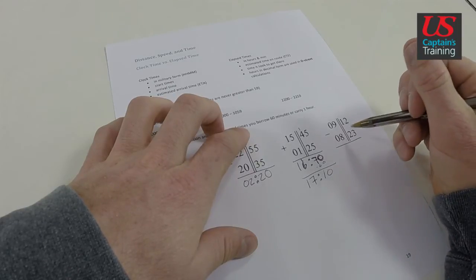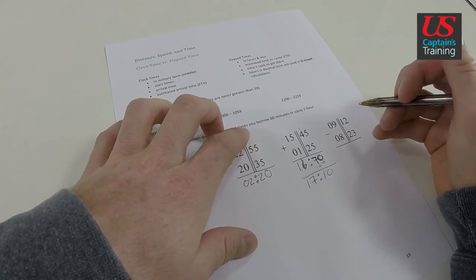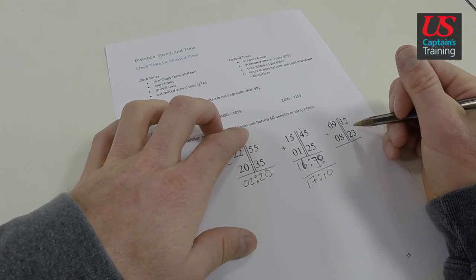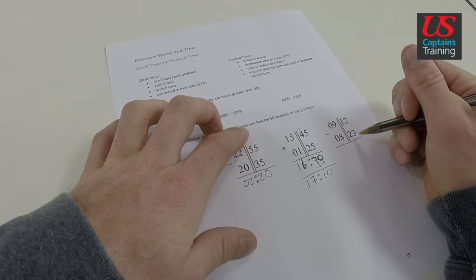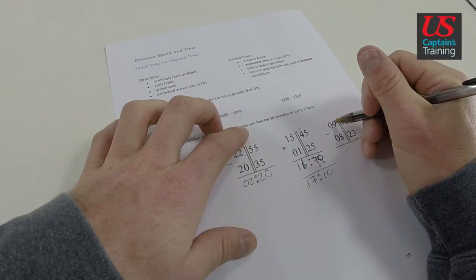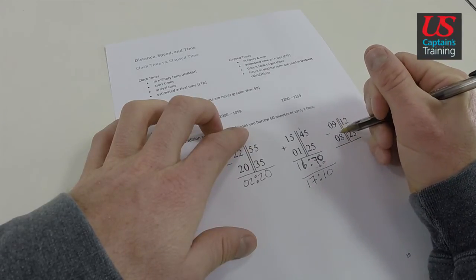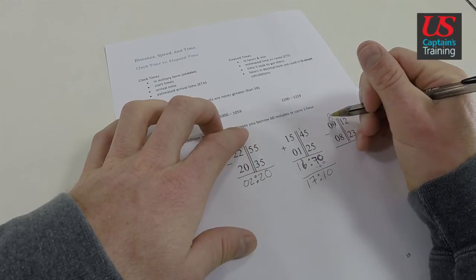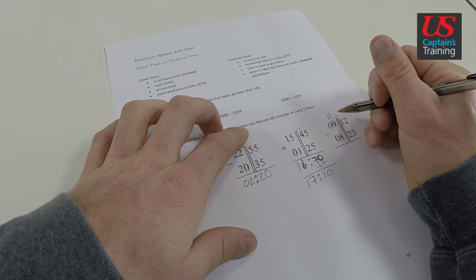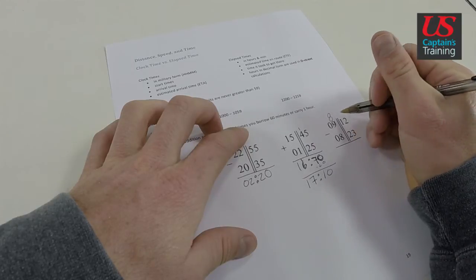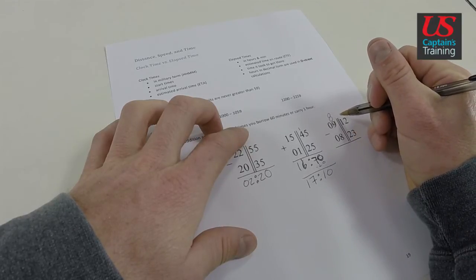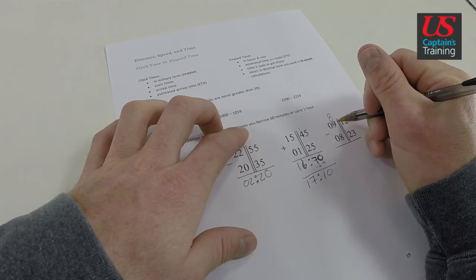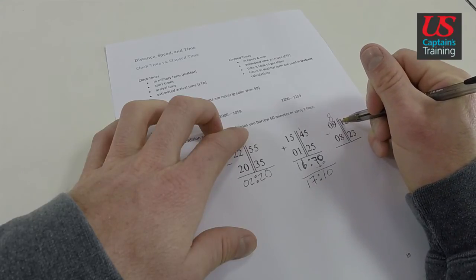But let's take a look at how the math works in this case. So 12 minus 23. We need more than 12 to minus 23. This 9, we can take one from here. So this will become an 8. And we borrowed an hour. But this one hour is actually 60 minutes. Right?